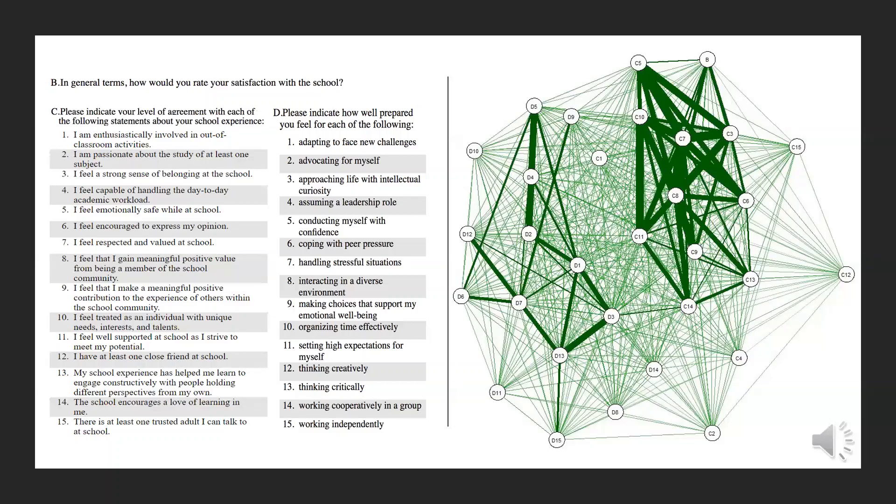Question C12, I have at least one close friend at school, is among the farthest from the other nodes because, compared to the other variables, it has fewer strong correlations. This seems strange because we all know how dependent success at school is on the presence of a close friend. This seems at first glance to be counter-intuitive.